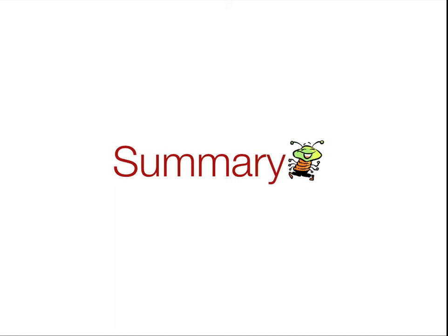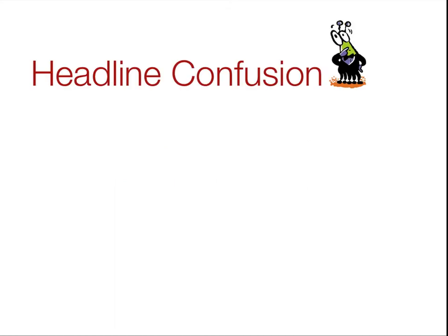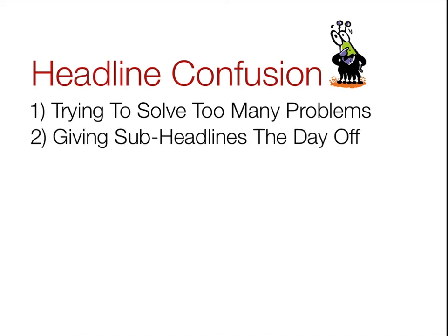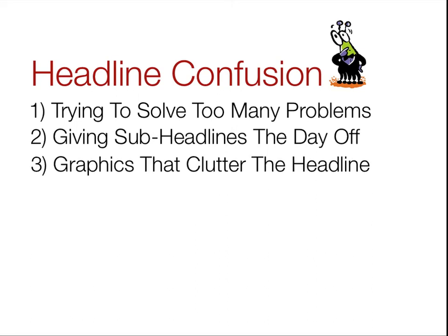Let's summarize the entire series. In headline confusion, we covered three parts: trying to solve too many problems; giving sub-headlines the day off — we want to make sub-headlines really work; and finally, graphics. Even colors can clutter the sub-headline, the headline, and all the text.